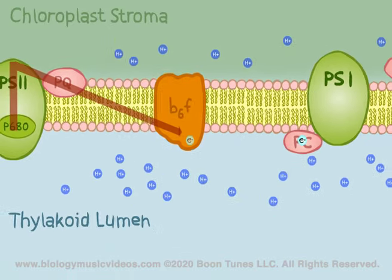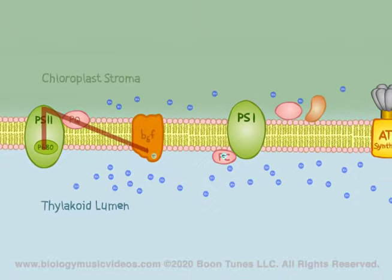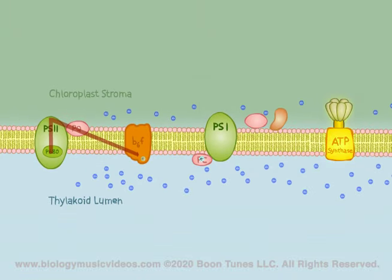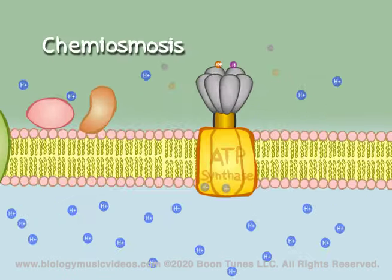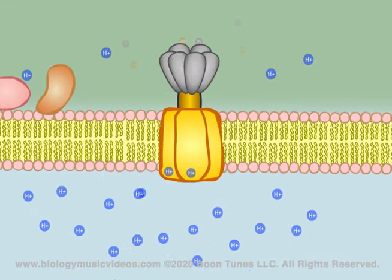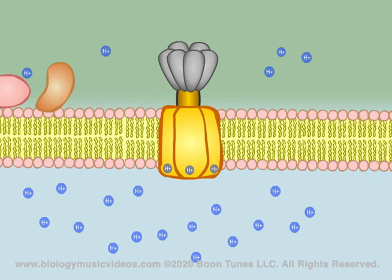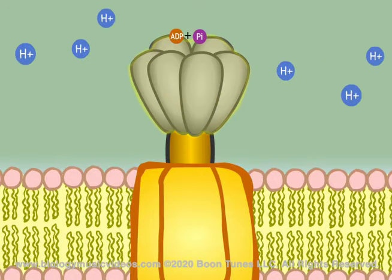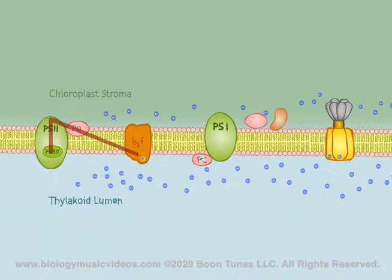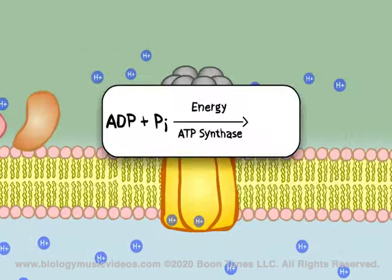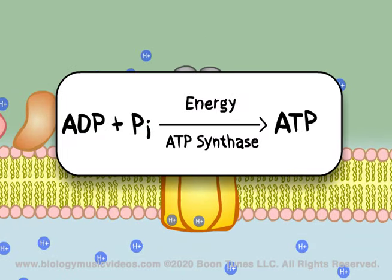Some of the protons then head back to the fluid stroma, leaving the thylakoid lumenal space through the enzyme ATP synthase. This is the chemiosmosis that powers ATP synthesis. As the protons pass through this enzyme it spins around like a turbine, releasing energy which binds phosphate with ADP. This step is called photophosphorylation. When ADP and phosphate bind, ATP is formed.